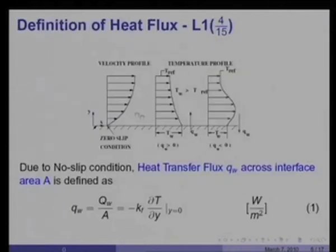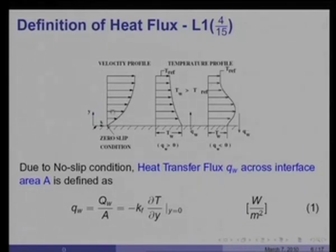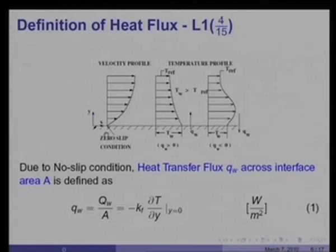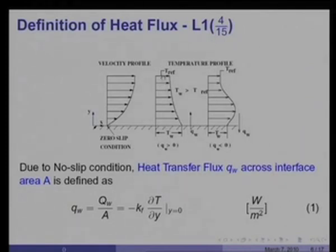The most important quantity in convective heat transfer is the heat flux at the wall. Consider a solid surface past which a fluid is flowing. Due to the action of viscosity close to the wall, the fluid will develop a velocity profile with zero velocity at the wall — this is called the no-slip condition, meaning the fluid is brought absolutely to rest at the surface. If there is heat transfer, the most commonly developed temperature profile will have some reference temperature far away from the wall, with the wall temperature greater than the fluid temperature, so heat transfer takes place from wall to fluid.